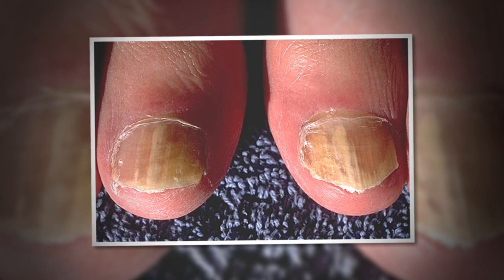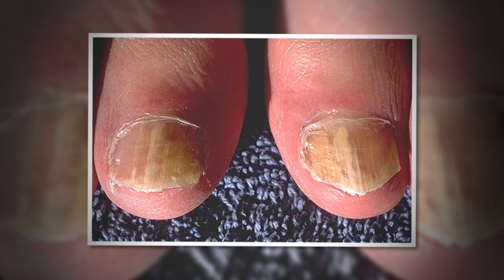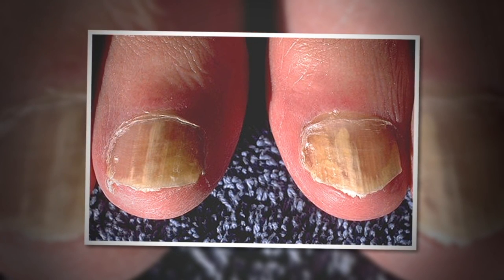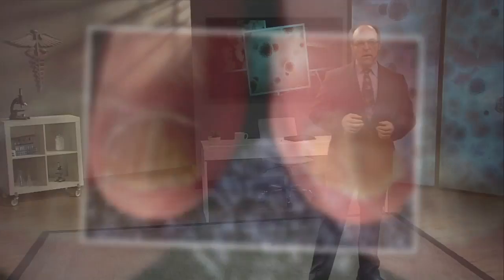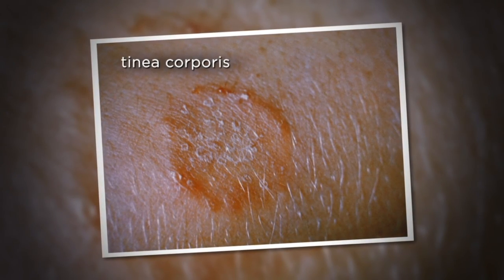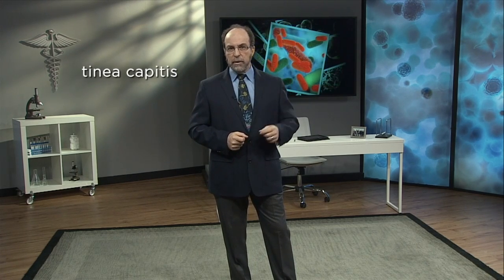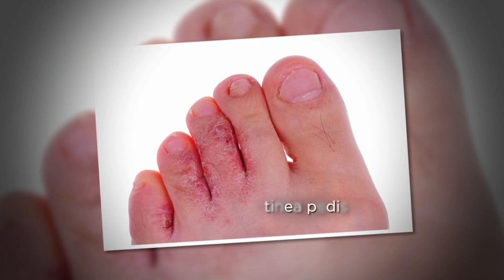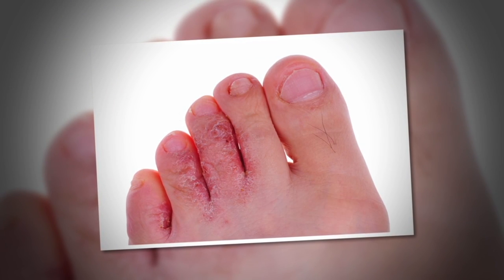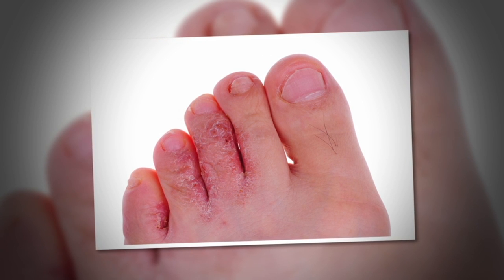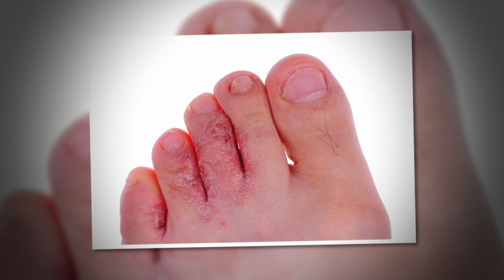Fungal nail infections do become more prevalent as we age, and about half of adults over the age of 70 are affected. Superficial fungal infections are also nicknamed as tinea. Tinea corporis forms a ring shape with a red raised border and is known as ringworm. When these dermatophytes involve the scalp, they're known as tinea capitis. When they involve the foot, they're known as tinea pedis, causing athlete's foot, which causes cracking and peeling of skin between the toes.